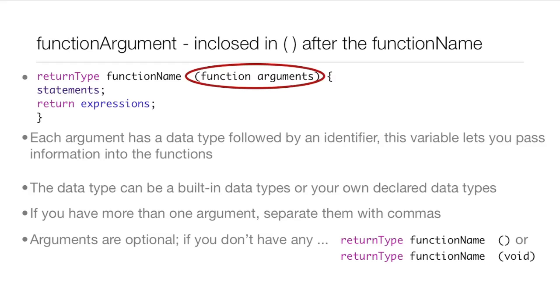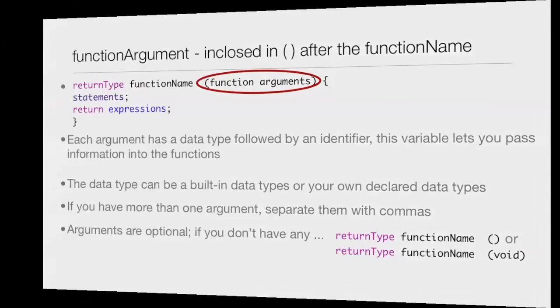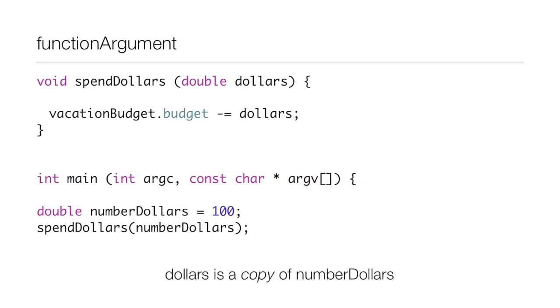Now here's how arguments really work. Above, we have void spendDollars, a little function that we've made ourselves. The argument is double dollars. Inside this function we have vacationBudget.budget -= dollars. Now we go